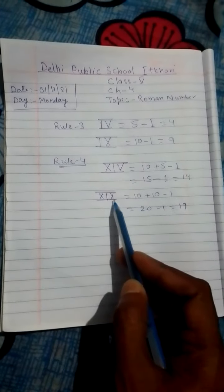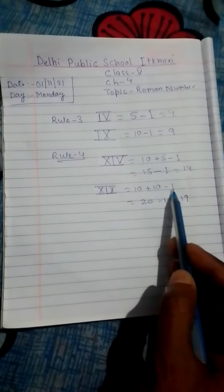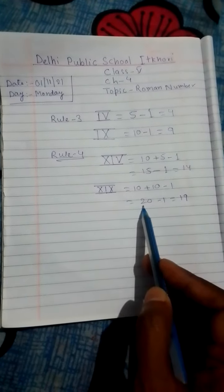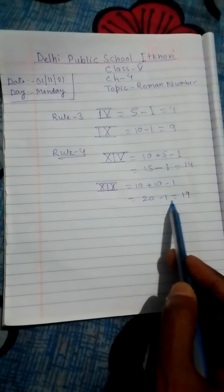Now for this X, 10 minus for this I, 1. This gives 20 minus 1, 19.